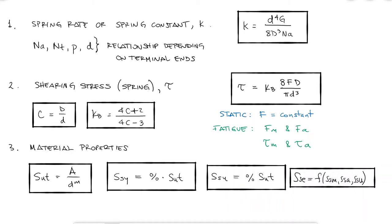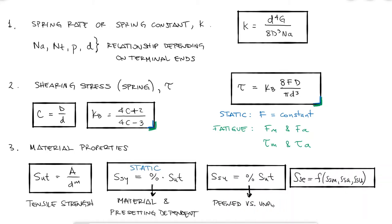Even the curvature correction factor Kb does not change. The tensile strength is needed for both cases too, static and fatigue, and the only real difference comes at the very end when estimating either the shearing yield strength for static loading, or the torsional modulus of rupture and shearing endurance limit for fatigue.